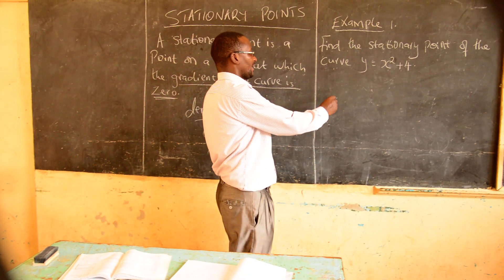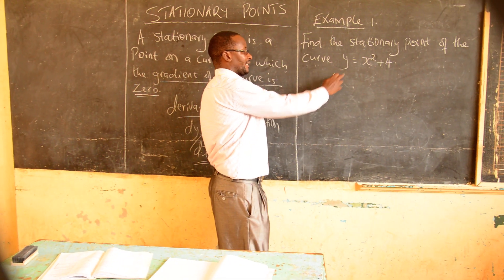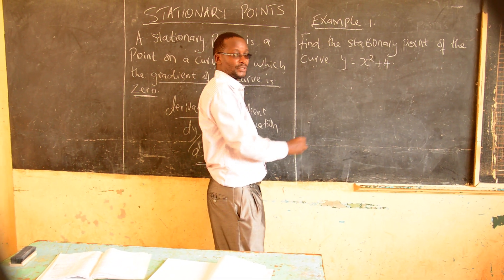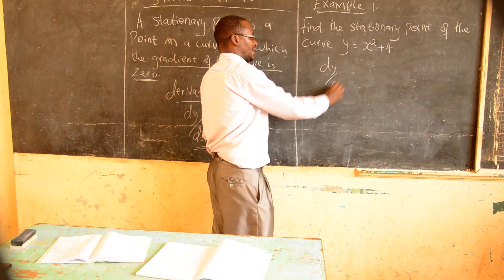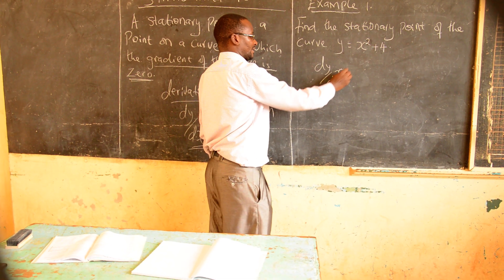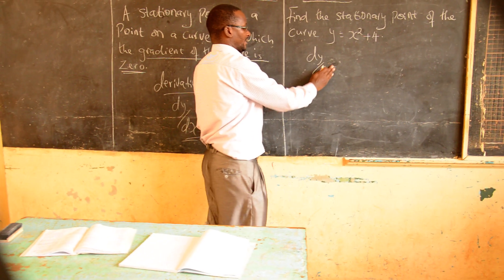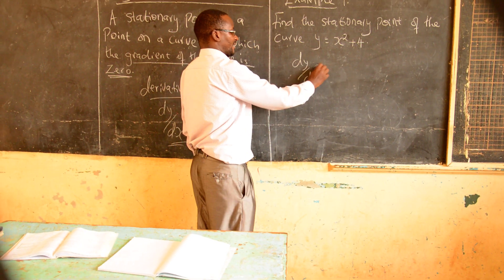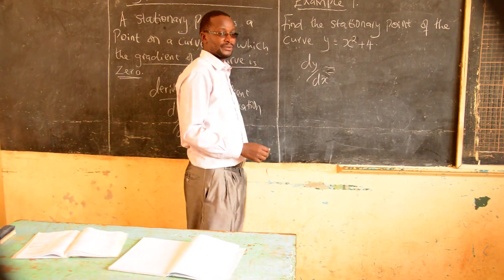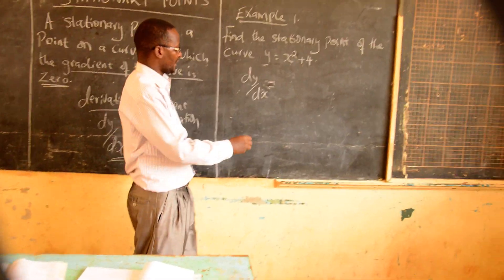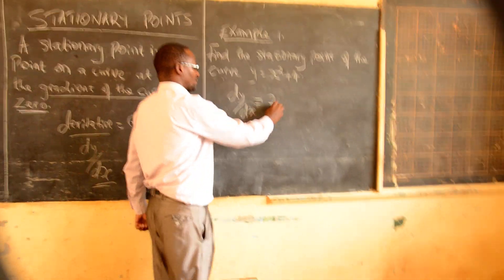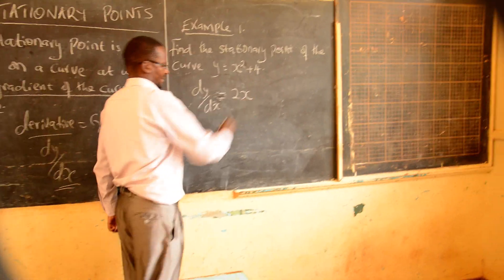We find the derivative of this equation. dy over dx is equal to — so when we differentiate this, you get dy over dx is equal to x.